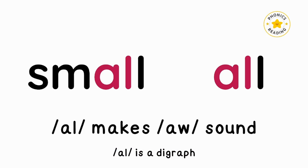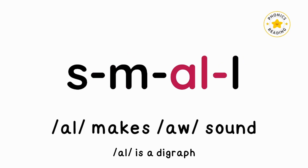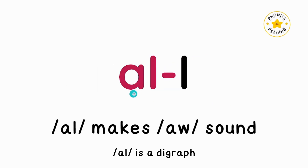In 'small' and 'all', the letters A and L together make a new sound: 'aw'. 'aw' is a digraph. So we read 'small' as 'sm-aw-l'. 'sn' is a consonant blend, then 'aw', then 'l'. There are two L's in words like 'small' and 'all', where the first L with the letter A makes the 'aw' sound, and the second L makes the 'l' sound.